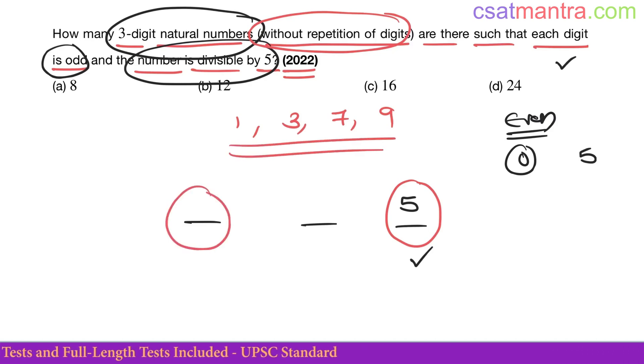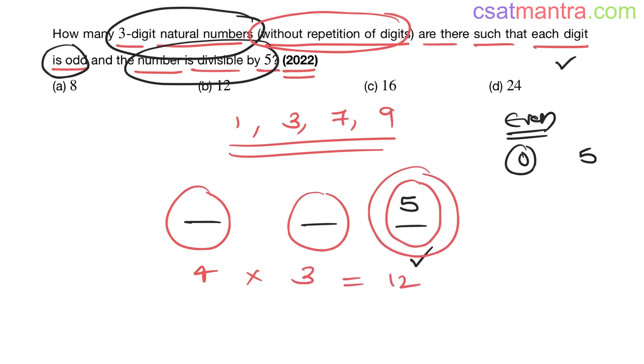This place can be filled in 4 ways. One digit gone. Now left with 3 digits. This place in 3 ways. 4 into 3 is 12. This place in only one way. So answer is B.